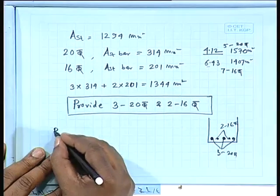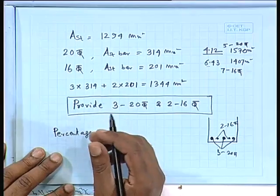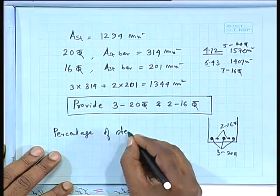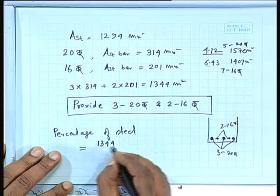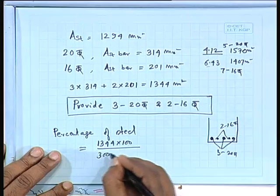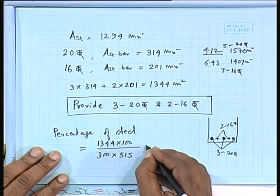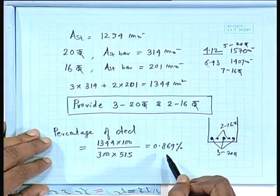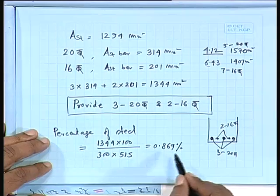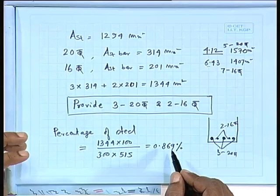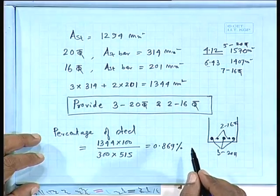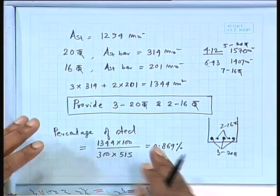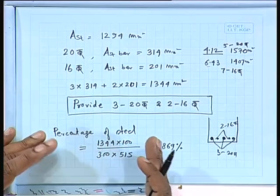The percentage of steel provided = (1344 × 100) / (300 × 515) = 0.869%. We must check this against the minimum limit of 0.85/fy ≈ 0.205%, which is satisfied. The limiting value check must always be performed to confirm the steel provided is not below minimum.